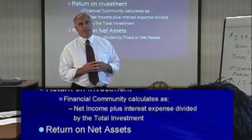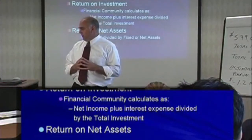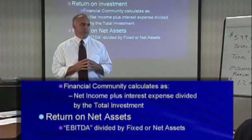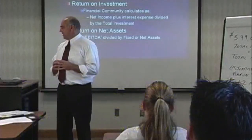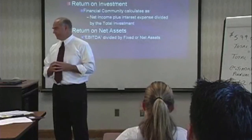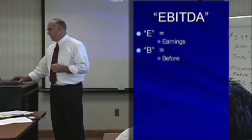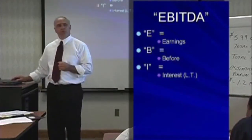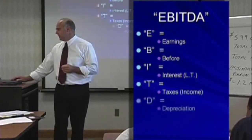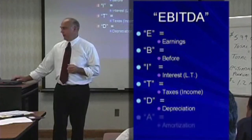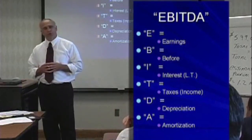We will also look at return on net assets. Net assets refer to the long-term or fixed assets, and that is calculated using the acronym EBITDA — Earnings Before Interest, Taxes, Depreciation, and Amortization. E stands for earnings, B for before, I for interest on the long-term debt, T for taxes (income taxes, not property taxes), D for depreciation — a non-cash expense — and A for amortization, also a non-cash expense. We need to calculate the annual EBITDA for our place and divide that by the fixed or net assets to calculate the return on net assets.